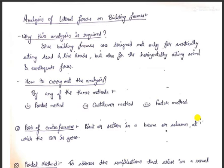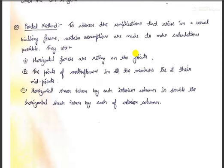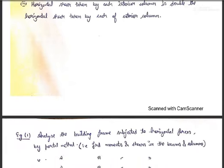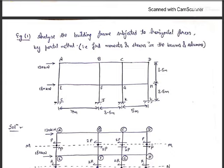Let's start with the portal method. In the portal method we have three assumptions. First, the horizontal forces acting on the frame are acting at the joints only. Second, the point of contraflexure of all members lies at their midpoints. Third, the horizontal shear taken by the interior columns is twice that of the horizontal shear taken by the exterior or windward columns. This will be more clear with a diagram.